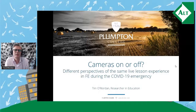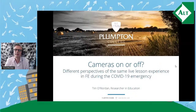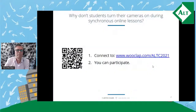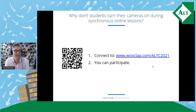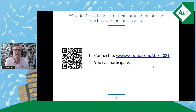It's a good question because normally teachers have been used to seeing the eager faces of their students peering at them in expectation during lessons. But during the past 18 months that experience has changed fundamentally. I'm going to have a little practice with WooClap — there is a QR code and a link to WooClap.com Alt C 2021 — and the question is: why don't students turn their cameras on during synchronous online lessons?